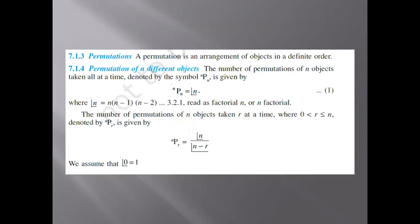Next is the permutation concept. Permutation is an arrangement of objects in a definite order. The permutation of n different objects is symbolically denoted when n objects are arranged taking r at a time, denoted by nPr.